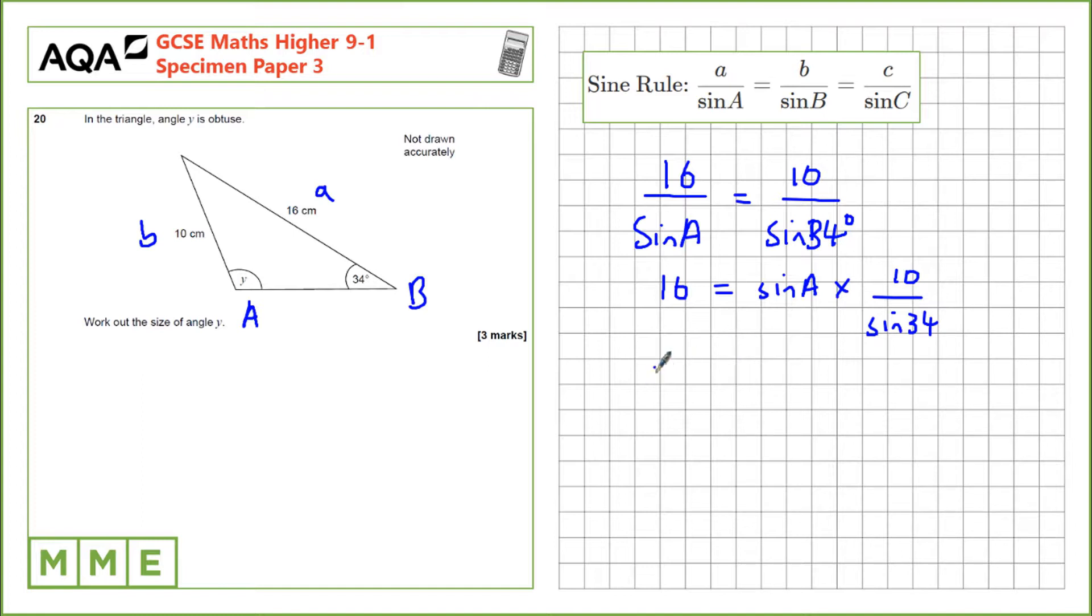We'll divide by this fraction so that sine A is sine 34 multiplied by 16. That gives us that sine A is roughly 0.8947.